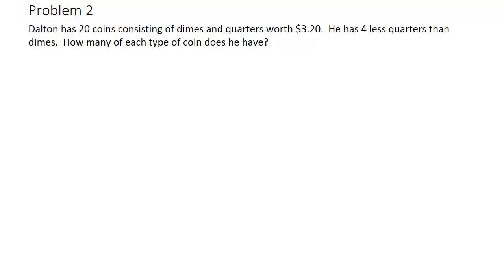Dalton has 20 coins consisting of dimes and quarters worth $3.24. He has four less quarters than dimes. How many of each type of coin does he have?